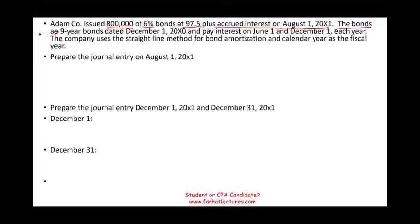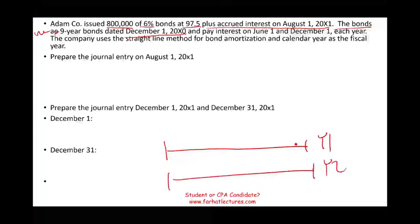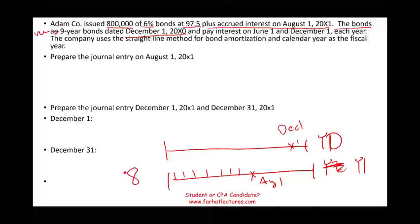The bonds are nine-year bonds dated December 1st, year zero. So the original date of the bond was December 1st, but we did not issue them until August 1st. So from December through January, February, March, April, May, June, and July — there are eight months between the date the bond was dated and the date it was issued. That's why we might have to deal with some accrued interest.